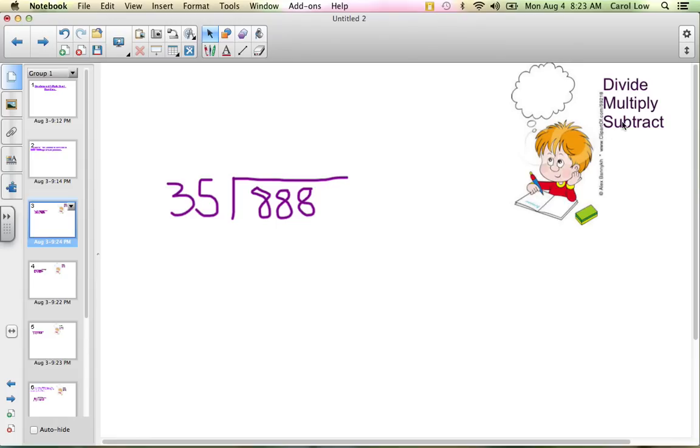Hopefully you've gotten into the habit of putting divide, multiply, subtract, or DMS somewhere on your paper so that keeps you in check and it keeps you on track. So let's get started. We're going to start off by dividing. Can 35 go into 8? Nope. But it can go into 88. So I'm going to put the first number right here.